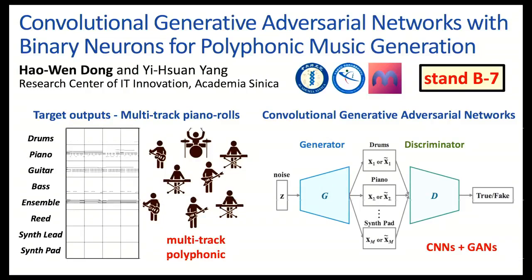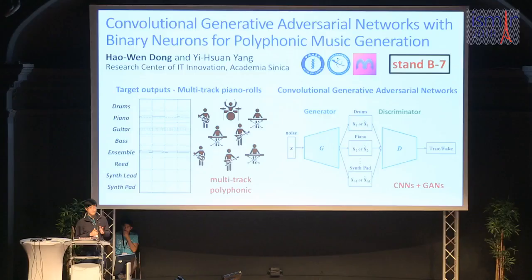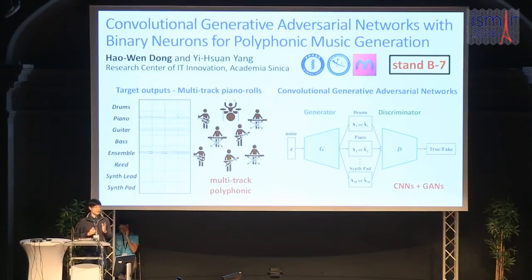Basically, what we are trying to generate here is a multitrack piano roll. You can see here an example of a multitrack piano roll of four bars. It consists of multiple tracks, and they are all polyphonic. On the right-hand side, I show a typical GAN, where the generator maps noise into the data space — the multitrack piano roll — and the discriminator tries to tell the real data from the fake data.